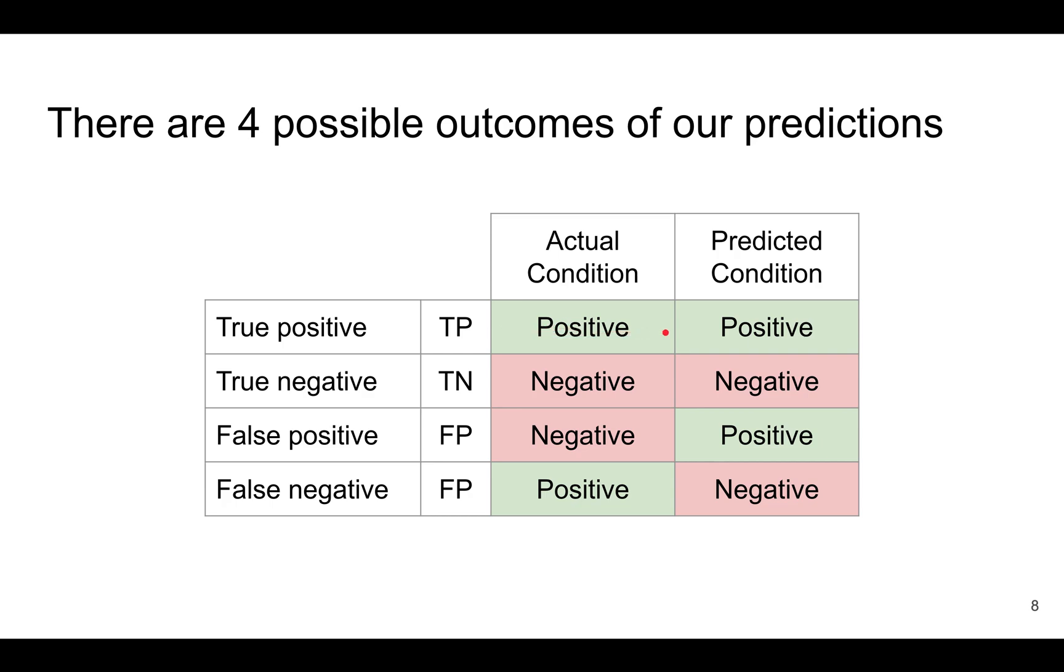There's a true positive where you predicted positive and the actual was actually positive. There's a true negative where you predicted negative and the actual was also negative. But there are also mistakes when you predicted positive, but actually the answer is negative. So this is called a false positive.